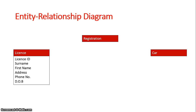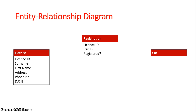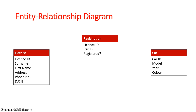For each entity, we put in our attributes. In the license entity, we'd have license ID, surname, first name, address, phone number, and date of birth. Basically, if we compare it to a flat file database, the attributes are our fields. In registration, we've got license ID, car ID, and whether it is registered. And in the car entity, we've got car, model, year, and color.